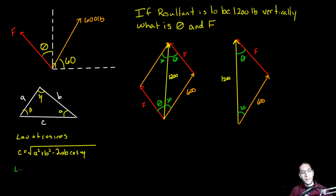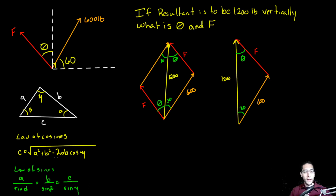The law of sines says side A over sine of alpha equals side B over sine of beta equals side C over sine of gamma — each side over its opposite angle. When trying to find a side length, it's better to use the law of cosines if possible, because the law of sines can result in an ambiguous case. We can use the law of sines if we know all three angles, but in this case we don't.